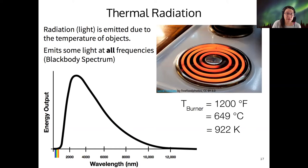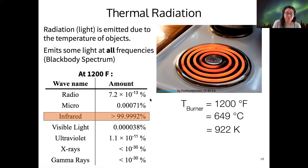And it turns out that this particular peak wavelength of 3000 nanometers occurs in the infrared. So almost all of the light that this burner gives off is in the infrared. But I told you that some light is emitted at all frequencies. So we can actually count up how much light is emitted at other frequencies that's not within the infrared range. And at 1200 degrees Fahrenheit, then more than 99.999% of the light is in the infrared. But there is a vanishingly small amount in all of the other wavelength ranges as well.